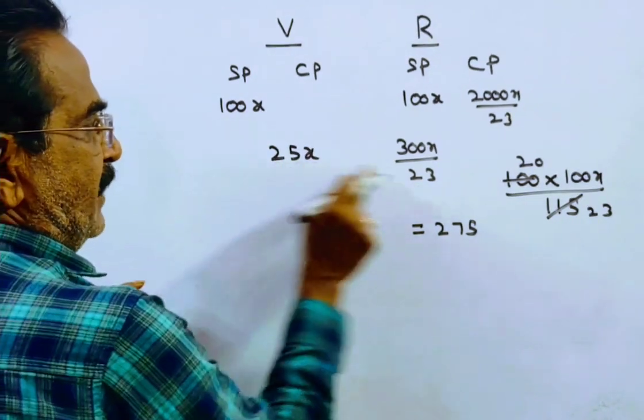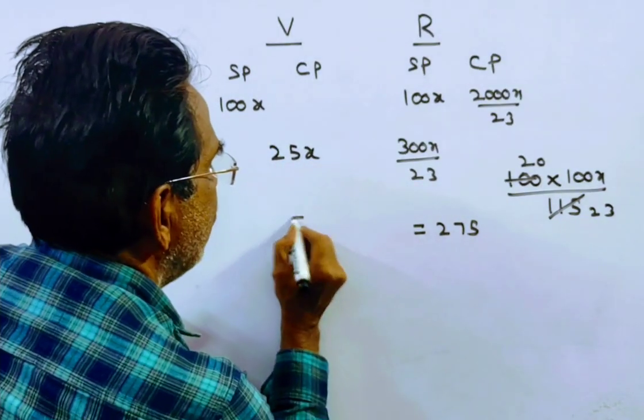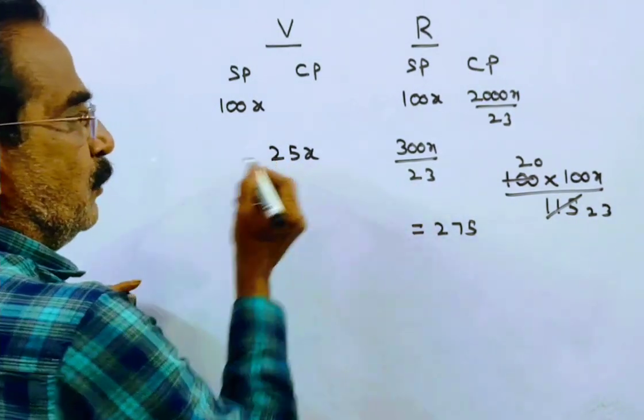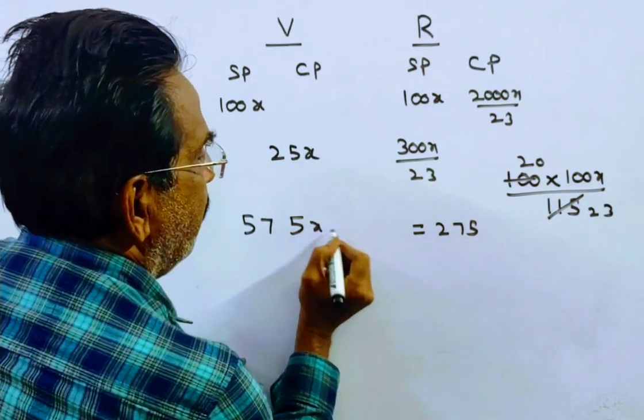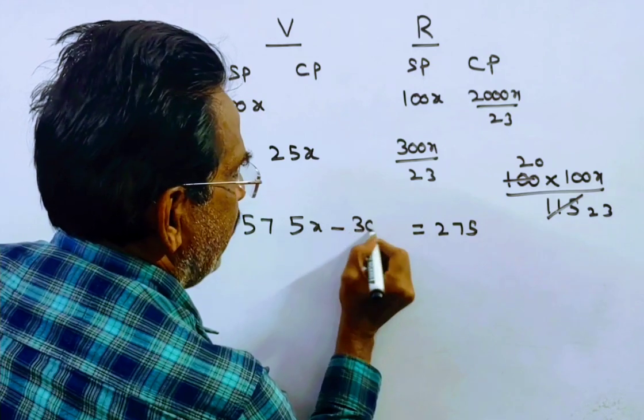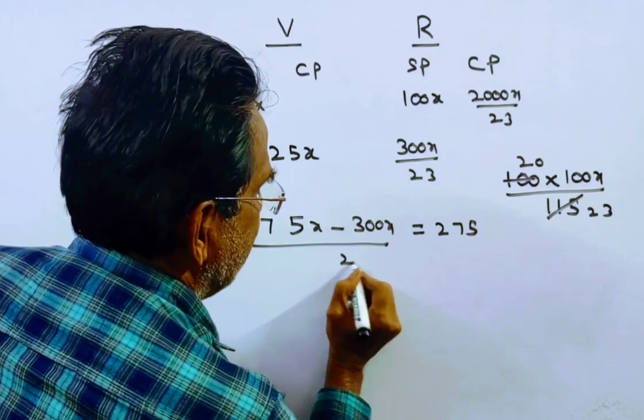Converting to a common denominator, we get 575x over 23 minus 300x over 23.